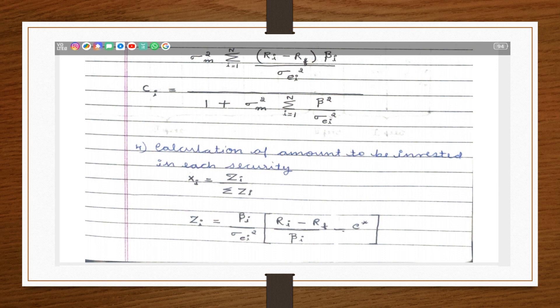Here we are given variance of the market index, sigma Ei square is the variance of the market index, and then Ri minus Rf, the expected return on stock i minus Rf, the risk-free return or riskless asset, into beta i.